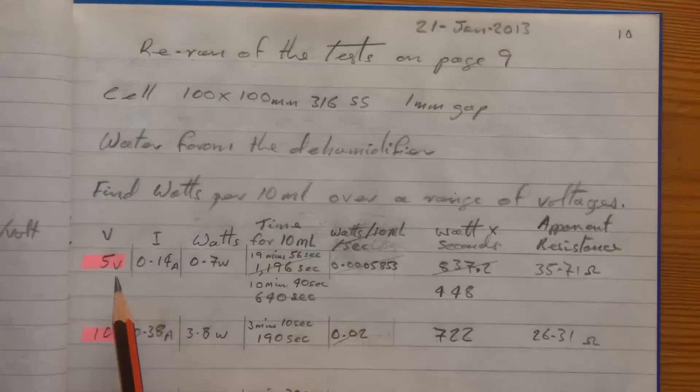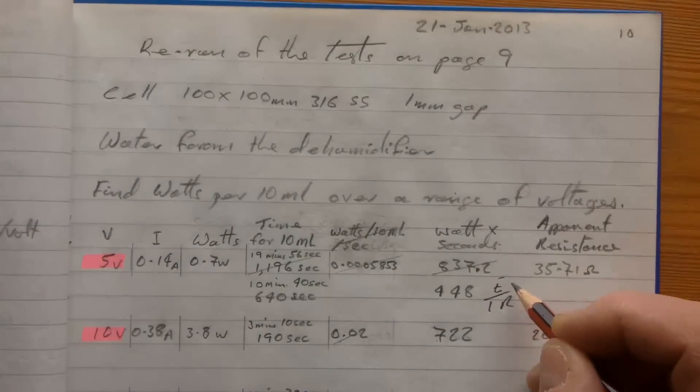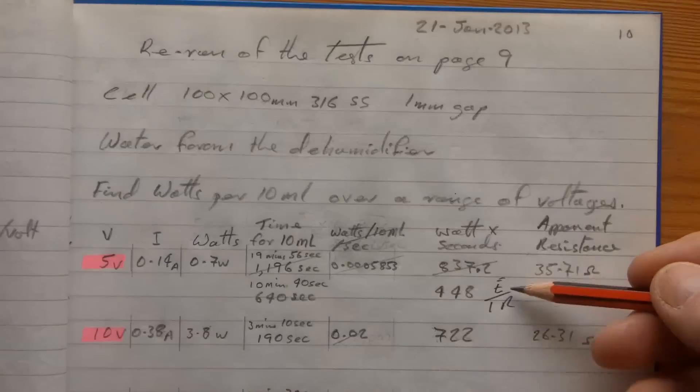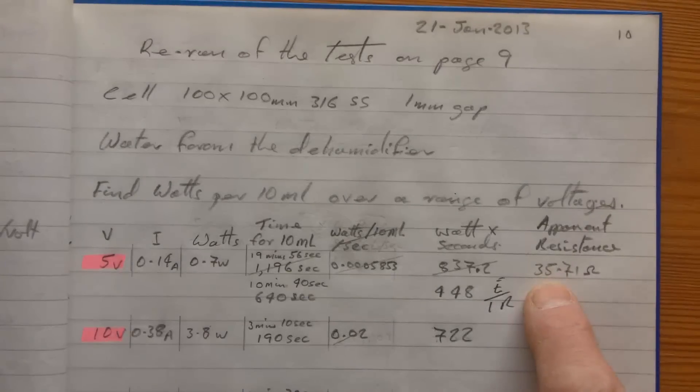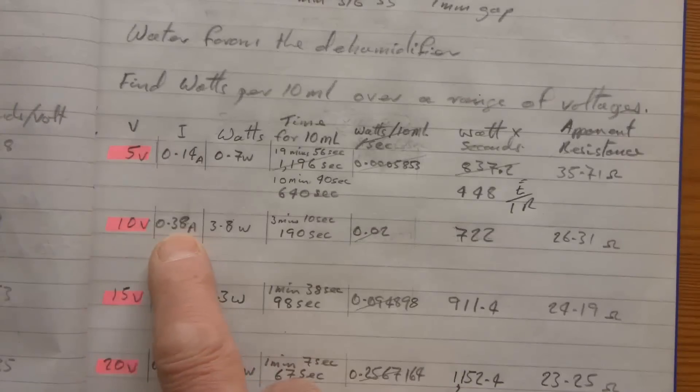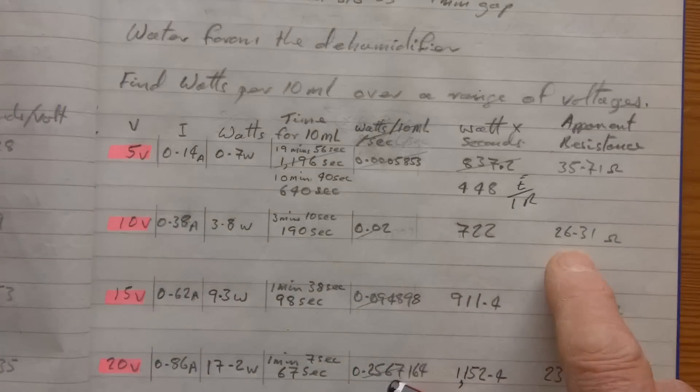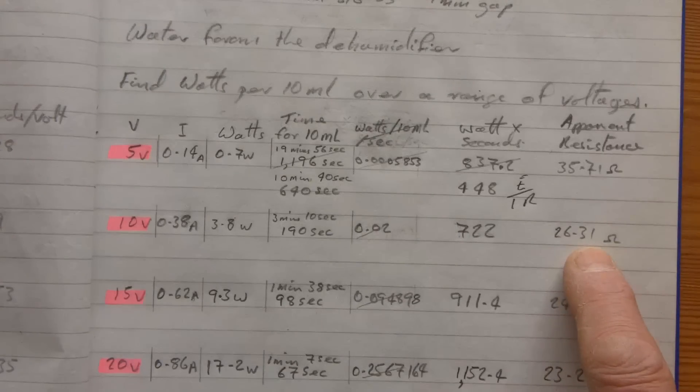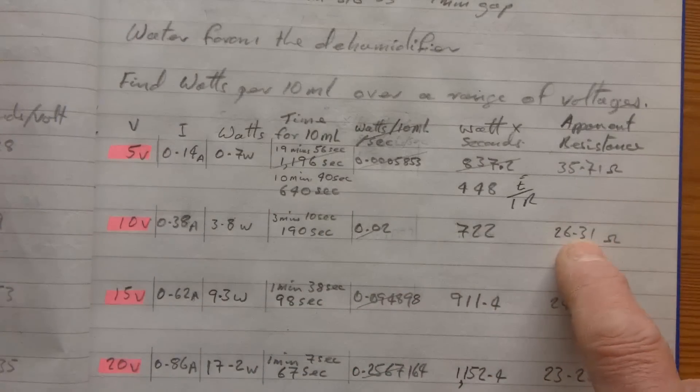So, going back to my notebook, at 5 volts, we pulled 0.14 amps. So, from Ohm's law, I still use E rather than V. That's what I was taught. So from Ohm's law, we divide the voltage by the current. And that gives us an apparent resistance of 35.71 ohms. I'm going to say apparent resistance because when we go to 10 volts, and we are now pulling 0.38 amps, and we divide the 10 volts by the current, we get 26.31 ohms. So, in other words, working at a higher voltage, the apparent resistance of the cell has changed.